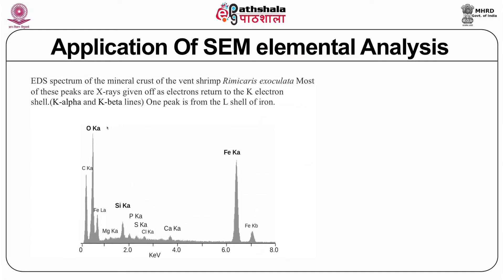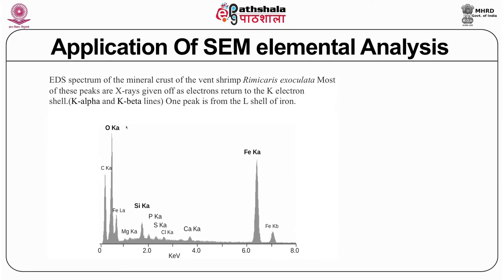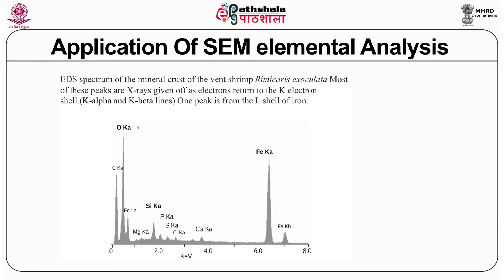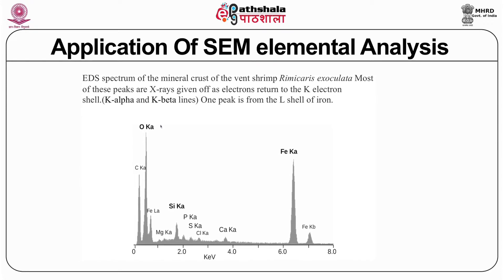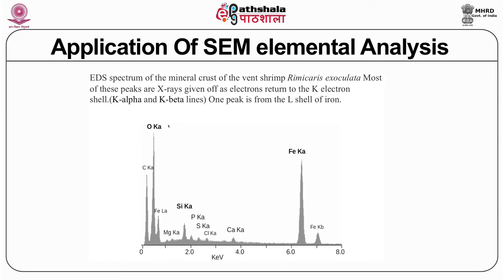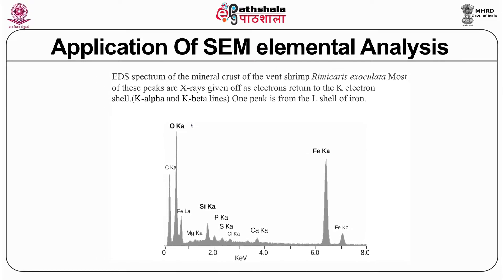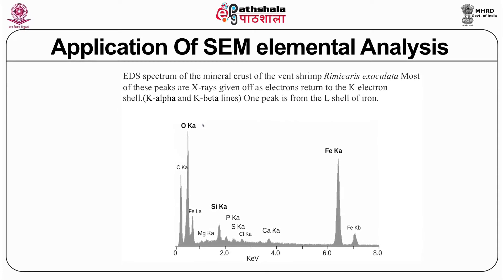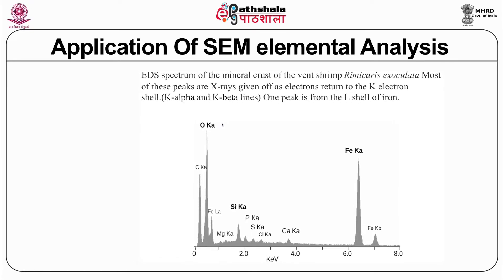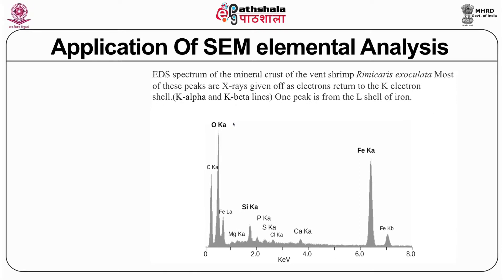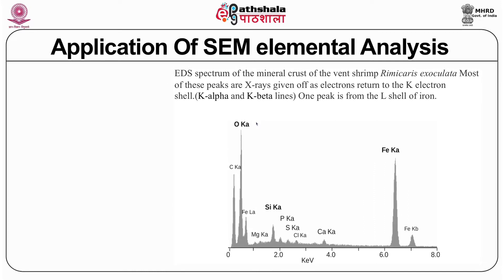Here is an example of SEM elemental analysis: an X-ray spectrum from a mineral (taken from a reference). Most of the X-ray peaks are given off by electrons coming from different shells — K electrons such as K-alpha and K-beta. Each electron coming from a different shell gives a different energy upon hitting the sample and coming out, generating a spectrum that allows you to analyze the sample's elemental composition.